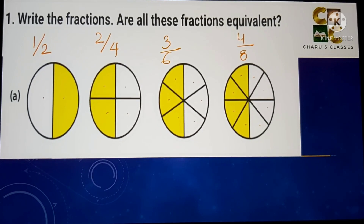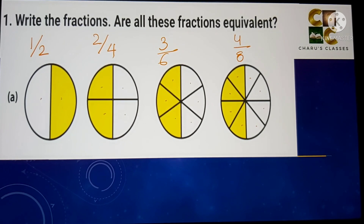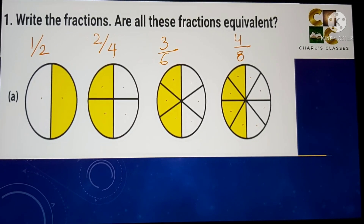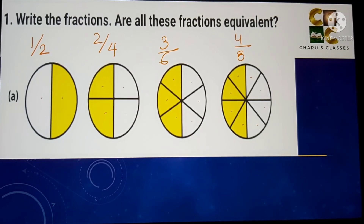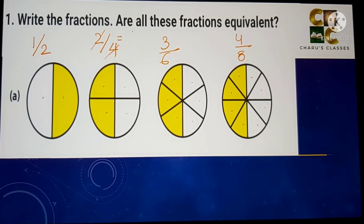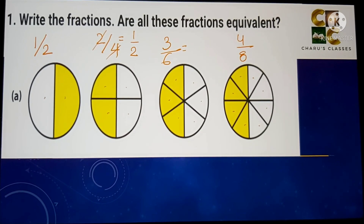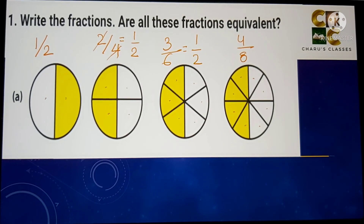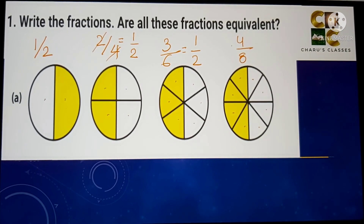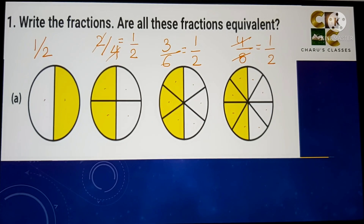They have asked us to write the fractions and check if they are equivalent. 1 by 2 is already in its simplest form. 2 by 4: we divide both numerator and denominator by 2 — 2 ones are 2 and 2 twos are 4 — so we get 1 by 2. 3 by 6: dividing by 3, we get 1 by 2. 4 by 8: dividing by 4, we get 1 by 2.